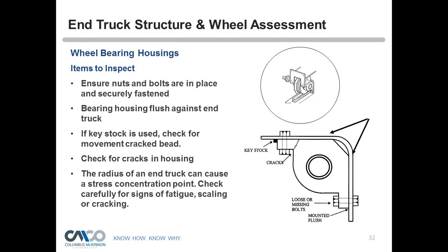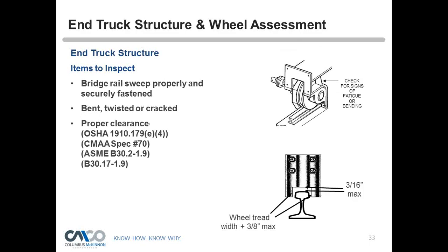For the end truck bearing housing, ensure nuts and bolts are in place, the bearing housing is flush against the end truck, check for movement of cracked beads if key stock is used, check for cracks in the housing, and carefully examine for fatigue scaling or cracking at radius stress concentration points. For the structure, check rail sweeps — maximum 3/16 inch above the rail head to the sweep, and maximum 3/8 inch between the head and the rail sweep. References: OSHA 1910.179, CMAA Spec 70, ASME B30.2 for top running cranes, and B30.17.